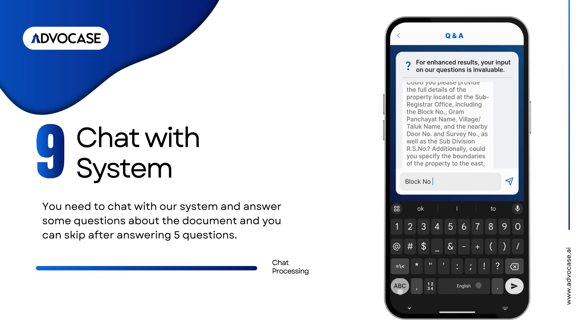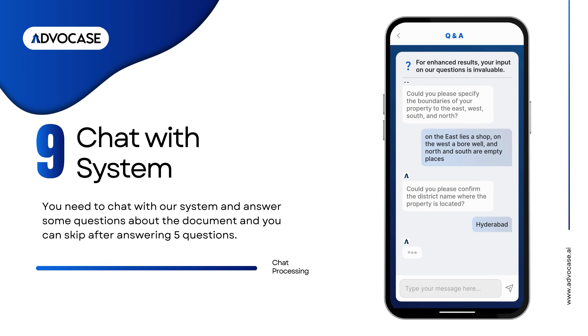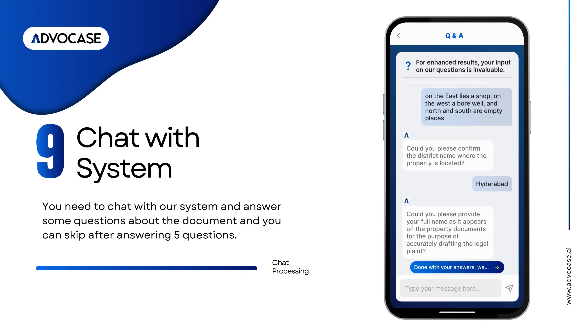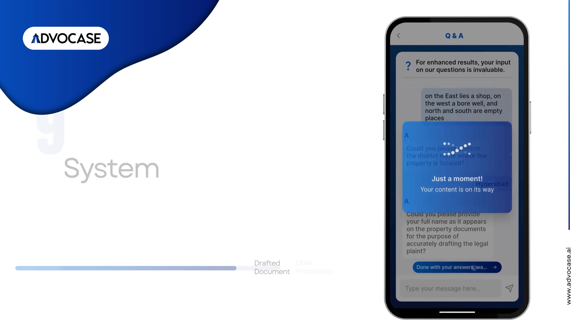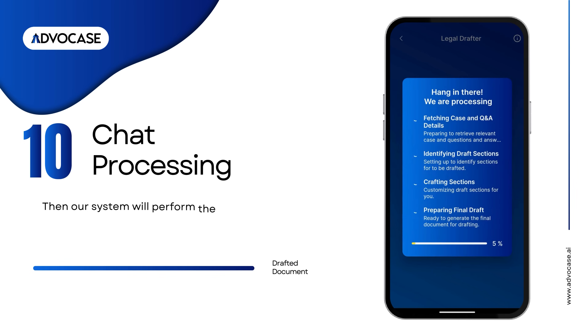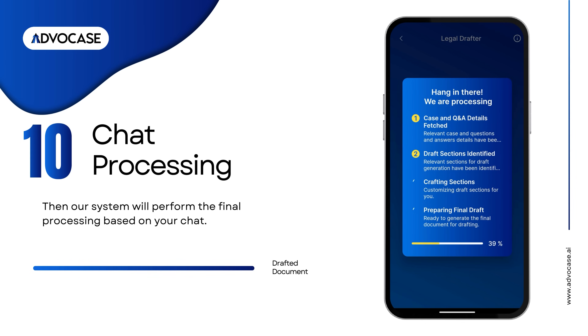You need to chat with our system and answer some questions about the document. You can skip after answering five questions. Then our system will perform the final processing based on your chat.